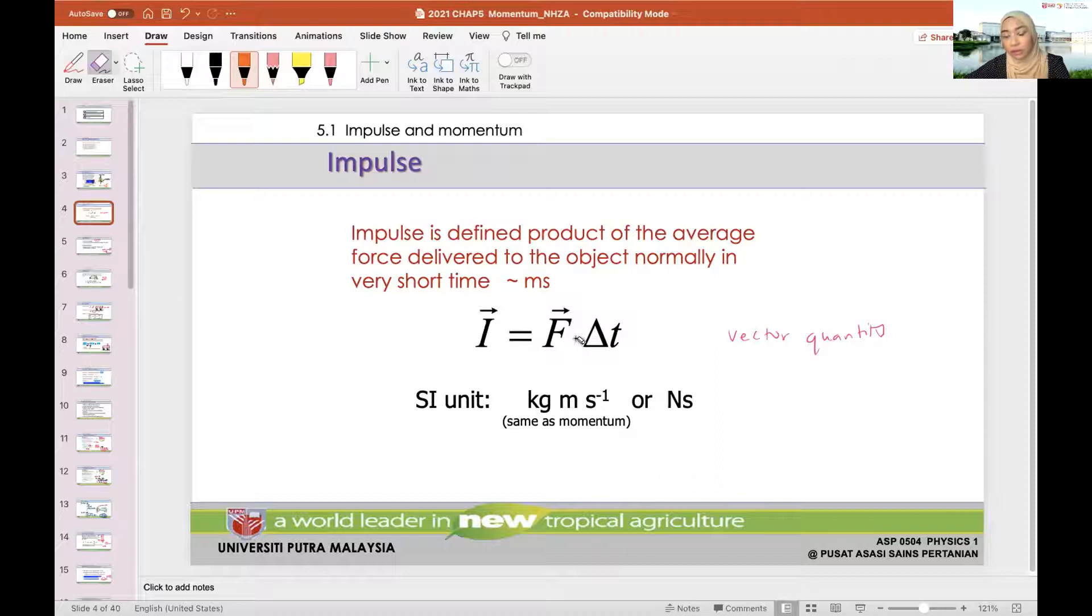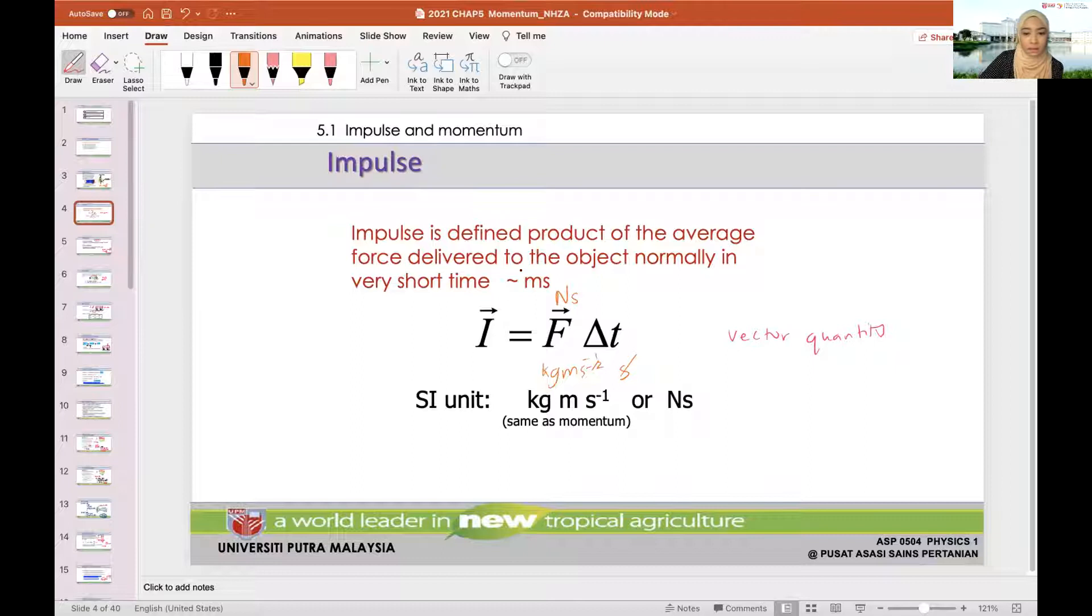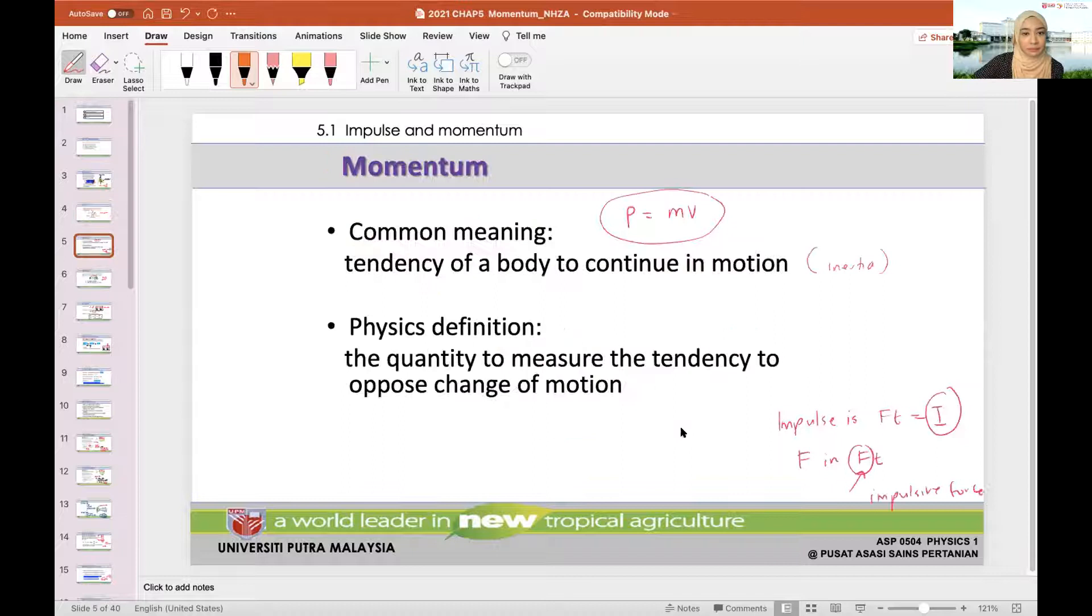Impulse is a vector quantity. The equation is F times delta T. Delta T is not a vector quantity, but force is a vector quantity, so therefore impulse is a vector quantity. Force is kilogram meter per second squared and time is seconds, so we can cancel that out. It becomes kilogram meter per second, or it becomes Newton second. Both are acceptable SI units.